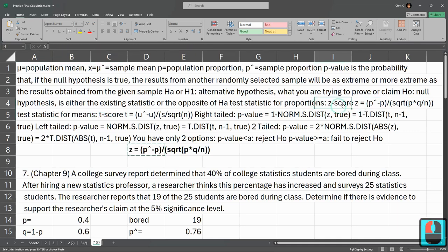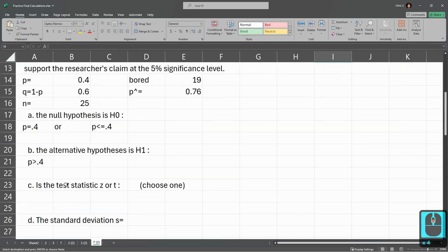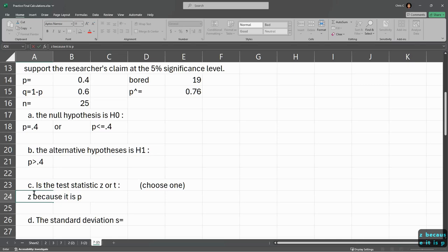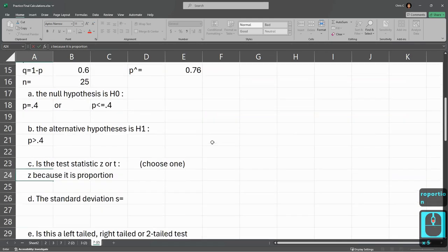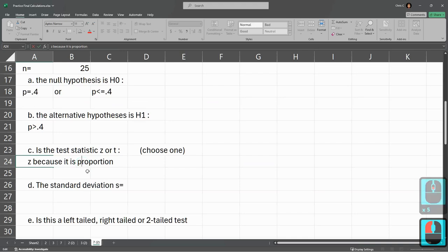So it's either a Z or a T. For us, we have a proportion, so it's going to be Z. I can never spell this word. Proportion. Z because it's a proportion.